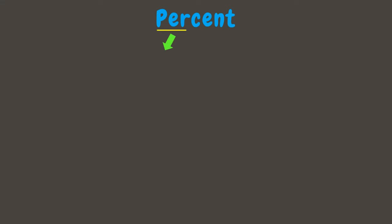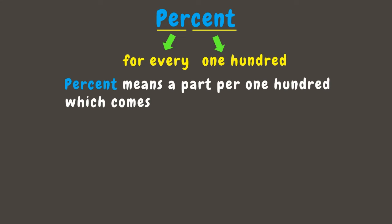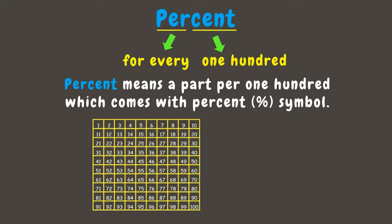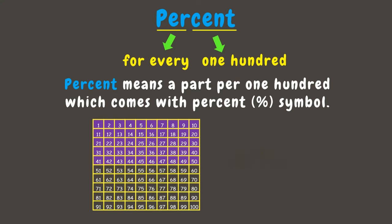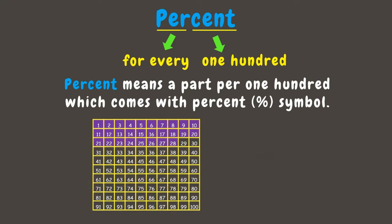In the word percent, 'per' means 'for every' while 'cent' means 100. Therefore, percent means a part per 100, which comes with the percent symbol. For example, a figure divided into 100 parts — if all 100 parts are shaded, that represents 100 percent. If 50 parts out of 100 are shaded, that means 50 percent. If only 28 parts out of 100 are shaded, this represents 28 percent. Always remember: percent means a part per 100.